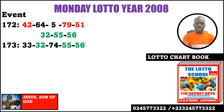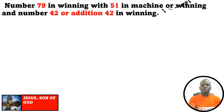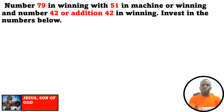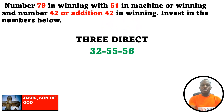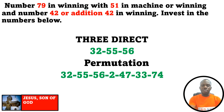In summary: number 79 in winning, with 51 in machine or winning, and number 42 or addition 42 in winning — therefore you need to invest in these numbers. We have 3.0 numbers: 32, 55 and 56. Always try your best to permute the numbers before you stake, as it is not easy to win 3.0 right in the 590 lottery system. The permutation list of numbers for the same key gives seven numbers: 32, 55, 56, single 2, 47, 33 and 74.